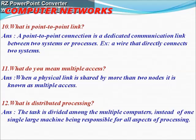Next question: what is a point-to-point link? A point-to-point connection is a dedicated communication link between two systems or processes. Example: a wire that directly connects two systems. Next question: what do you mean by multiple access? When a physical link is shared by more than two nodes, it is known as multiple access.